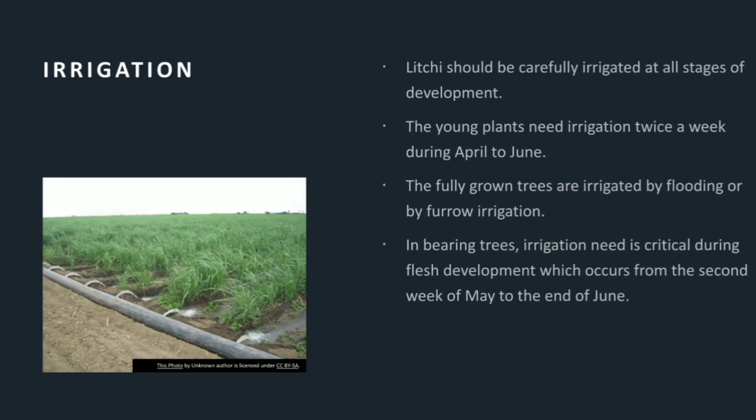Irrigation: Lychee should be carefully irrigated at all stages of development. Young plants need irrigation twice a week during April to June. Fully grown trees are irrigated by flooding or furrow irrigation. In bearing trees, irrigation is critical during flesh development, which occurs from the second week of May to the end of June.